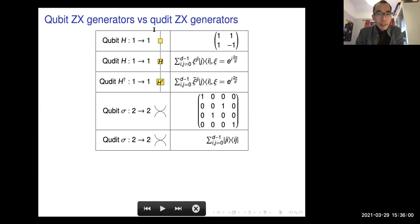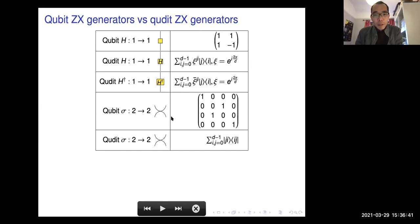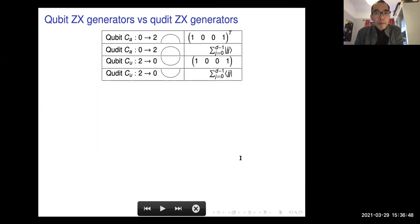For the other generators: in the Q-bit case the Hadamard is the non-normalized one — just the matrix without a scalar. In the Q-dit case, because it's not self-adjoint, we need a Hadamard which is the discrete Fourier transformation without the scalar, and also a Hadamard dagger which is the inverse of the generalized Hadamard. The swap can be generalized straightforwardly, and the cap and cup can also be easily generalized in the Q-dit case.